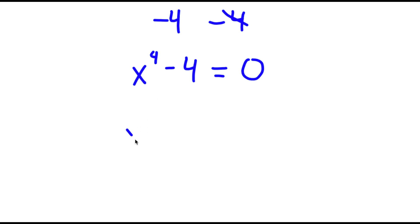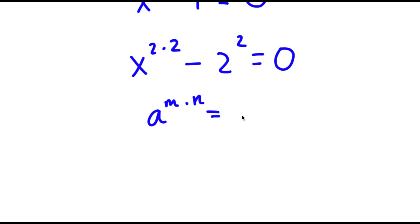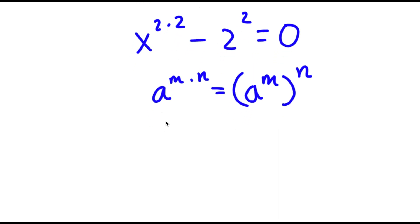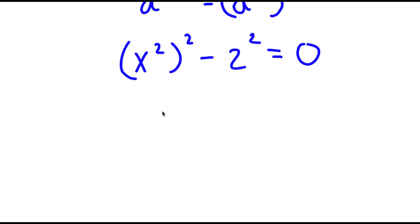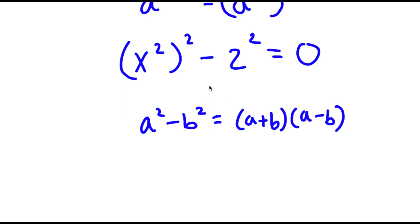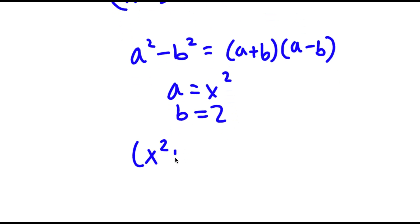Now, x to the power of 4 I can rewrite as x to the power of 2 times 2, and 4 I can rewrite as 2 squared. If I have something in the form a to the power of m times n, this equals a to the power of m to the power of n. So x to the power of 2 times 2 equals x squared to the power of 2. Now I have this minus 2 squared equals 0. Using the difference of squares, a squared minus b squared equals a plus b times a minus b, where a is x squared and b is 2. So I have x squared plus 2 times x squared minus 2 is equal to 0.